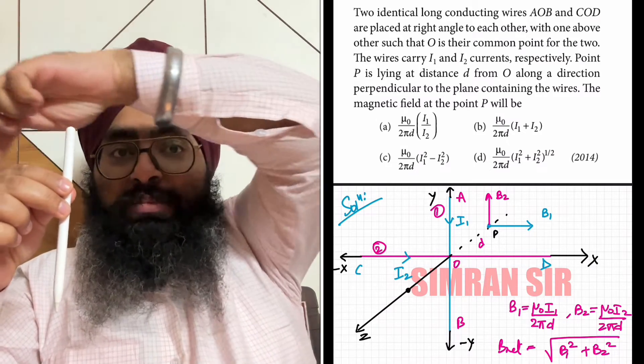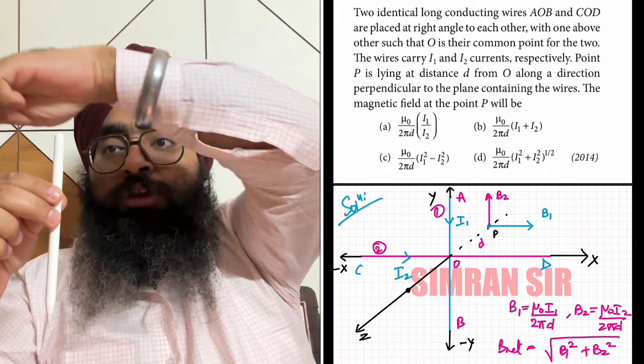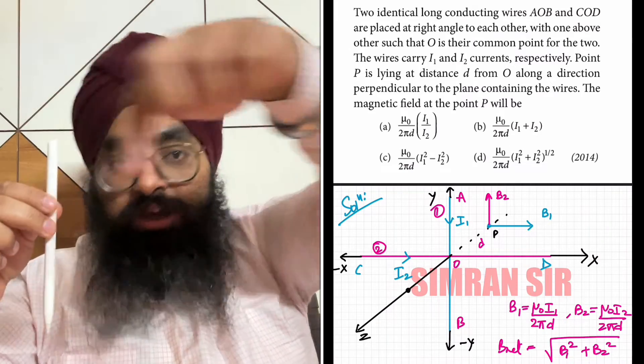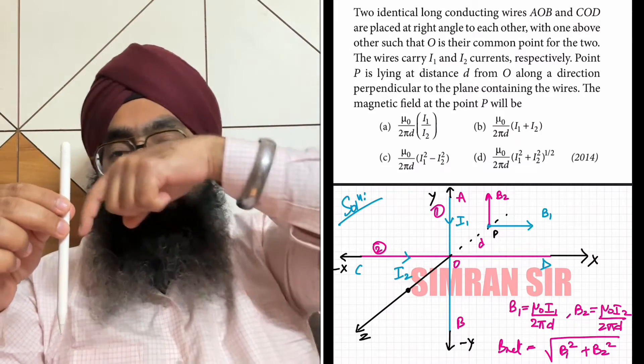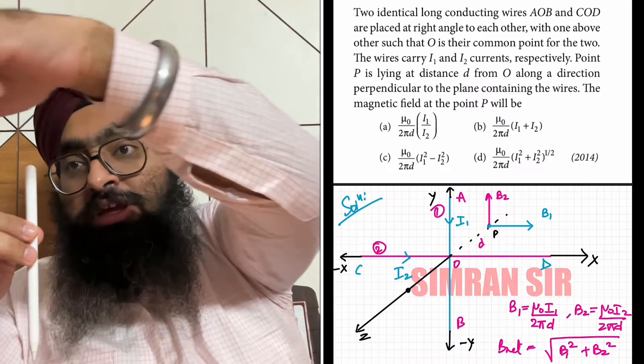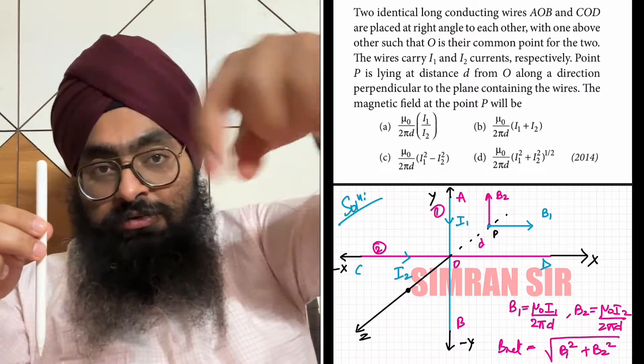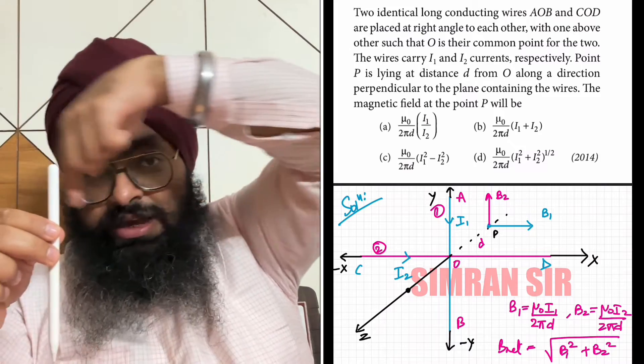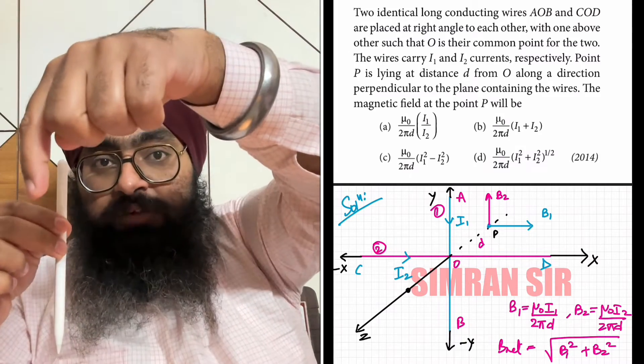The magnetic field lines are like circles. If I point here at this point P, the magnetic field direction would be tangential to this circle.